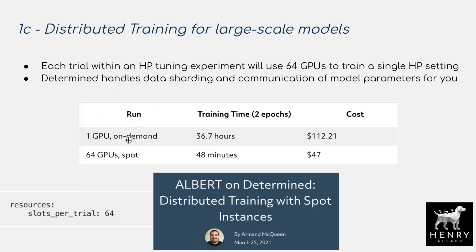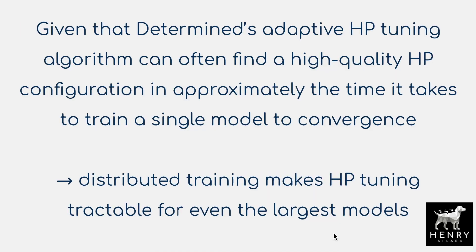Next we get into on-demand versus spot instances, one of the most exciting ideas in this presentation. You can see the training time reduction from one GPU to 64 GPUs. Combining the asynchronous early stopping search algorithm with distributed training: given that Determined's adaptive hyperparameter tuning algorithm can find a high-quality configuration in about the same time it would take to train a single model to convergence, the distributed training makes hyperparameter tuning tractable even for the largest models.